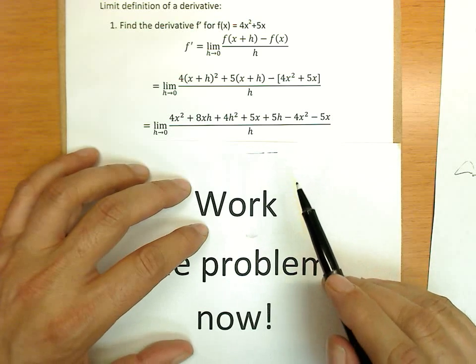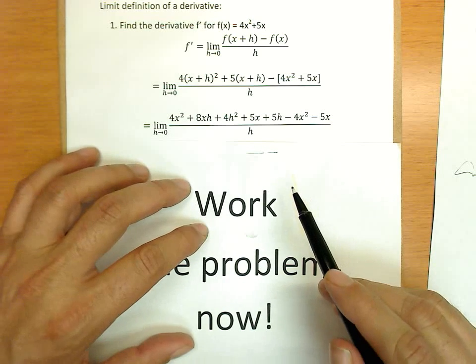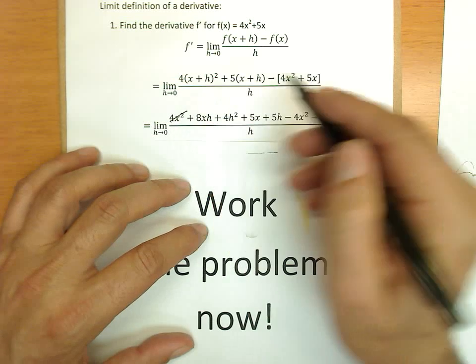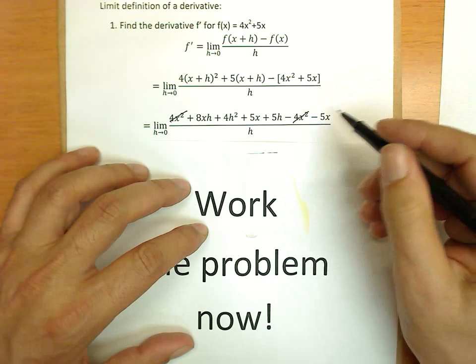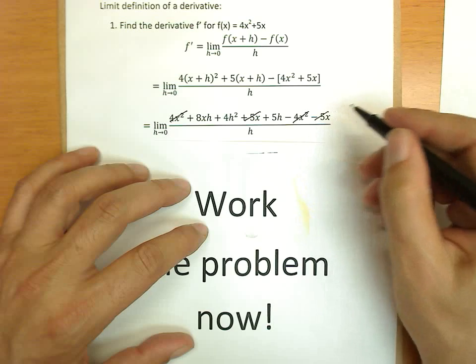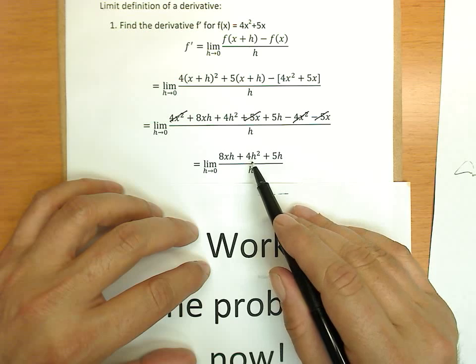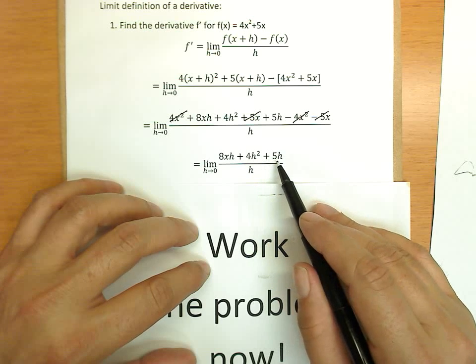So, we've got a lot of terms, but this is the end of the problem growing and now things will simplify. We look through this line and we can see many things that cancel. 4x² cancels -4x². Positive 5x cancels -5x. So, in the next step, simplifying, we are left with 8xh + 4h² + 5h.